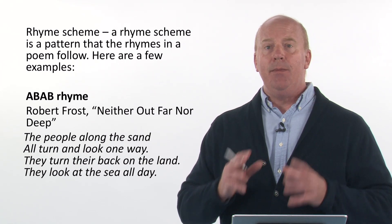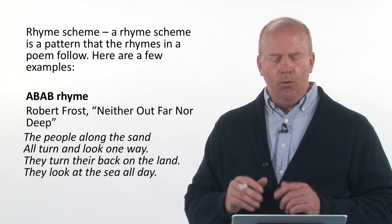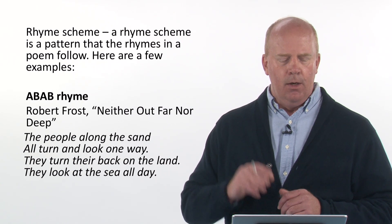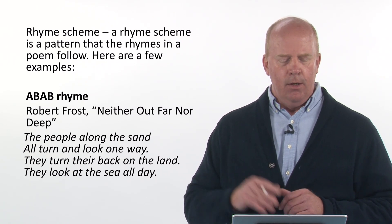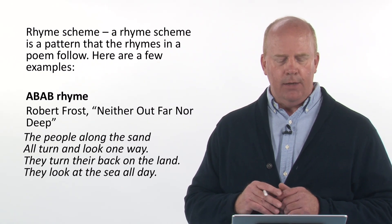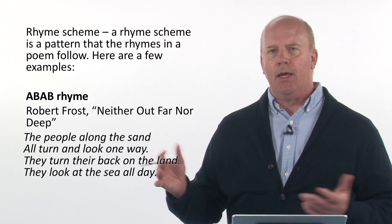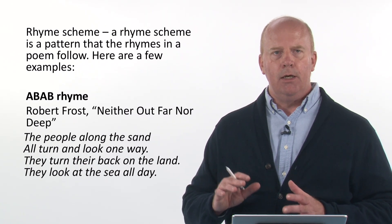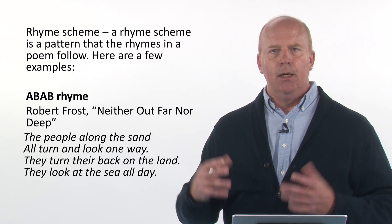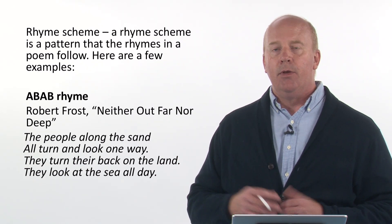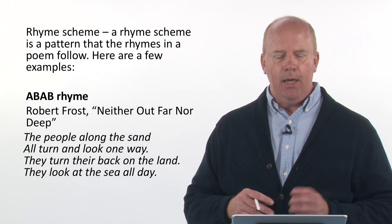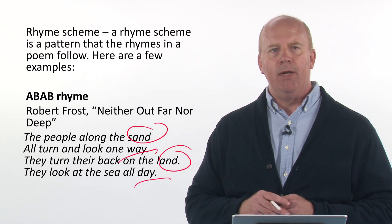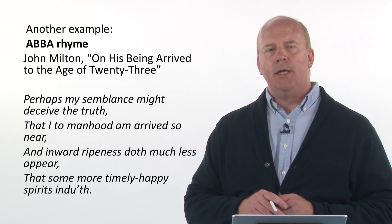The rhyme scheme is a pattern that the rhymes in a poem follow. Here we've got an ABAB example — Robert Frost's 'Neither Out Far Nor In Deep': 'The people along the sand, all turn and look one way. They turn their back on the land. They look at the sea all day.' You can hear that 'sand' rhymes with 'land,' and 'way' rhymes with 'day' — this is an ABAB rhyme scheme, unlike the AABBCCDD pattern in a lot of hip-hop.